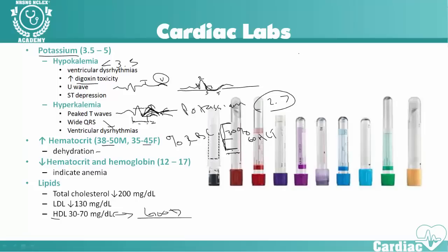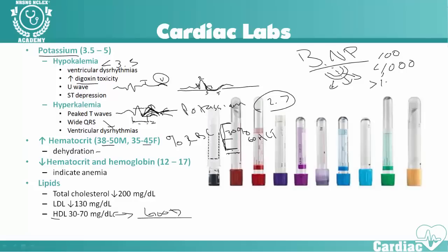A couple of labs I want you to remember are BNP — brain natriuretic peptide. We talked about this with heart failure. As the ventricles stretch, as there's increased ventricular stretch, it's going to release BNP into the system. Normal value should be under 100. You may notice patients with heart failure have levels 4,000 and above. Anytime we get over 100, that's indicative of ventricular stretch and heart failure. BNP is really a big one indicative of heart failure.